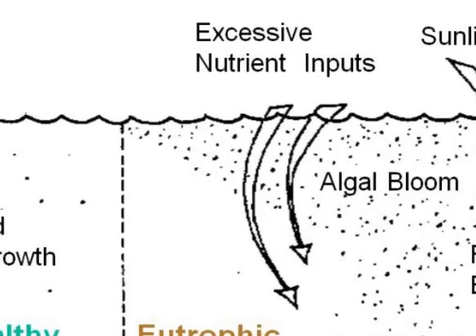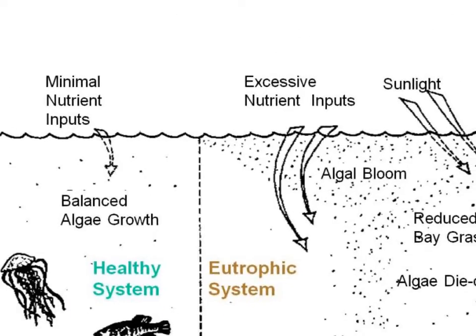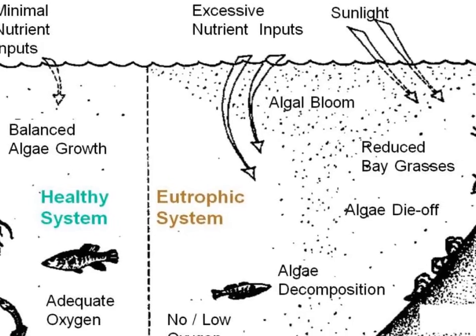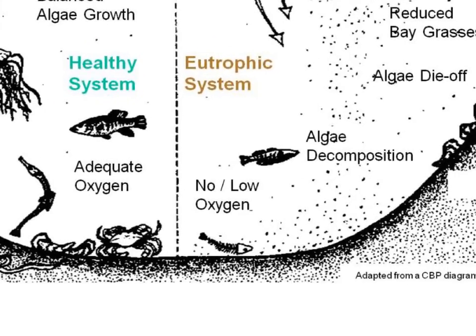We have some excessive nutrient inputs — that's the fertilizer going into the waterway — and it causes an algal bloom. You're causing a trophic cascade, and those algae die off and decompose. That process, as you learned by doing your homework, requires oxygen, so it's pulling all the oxygen out of the water.